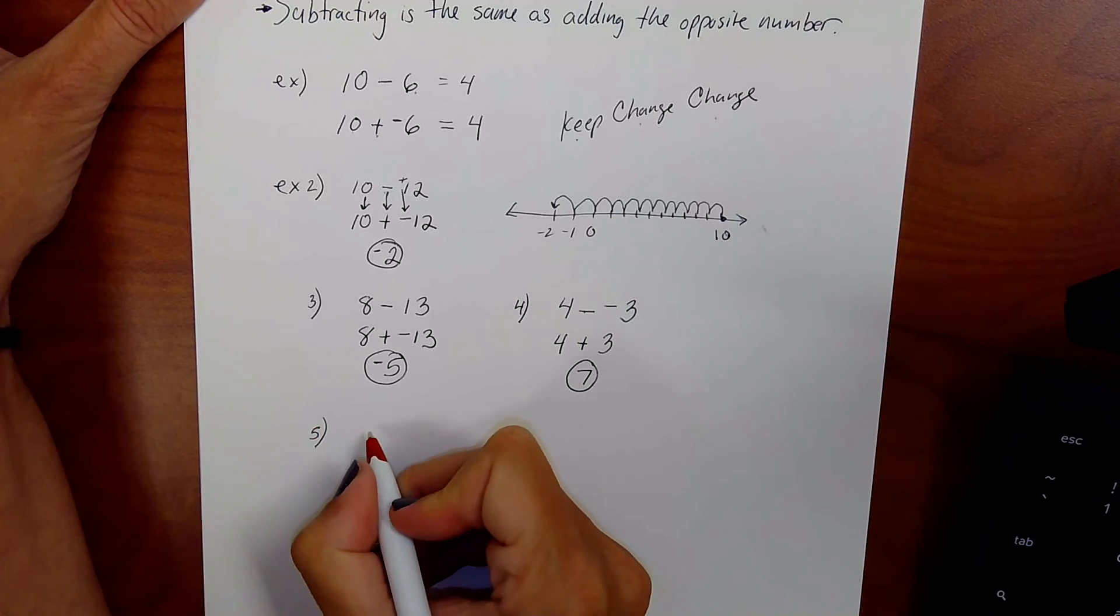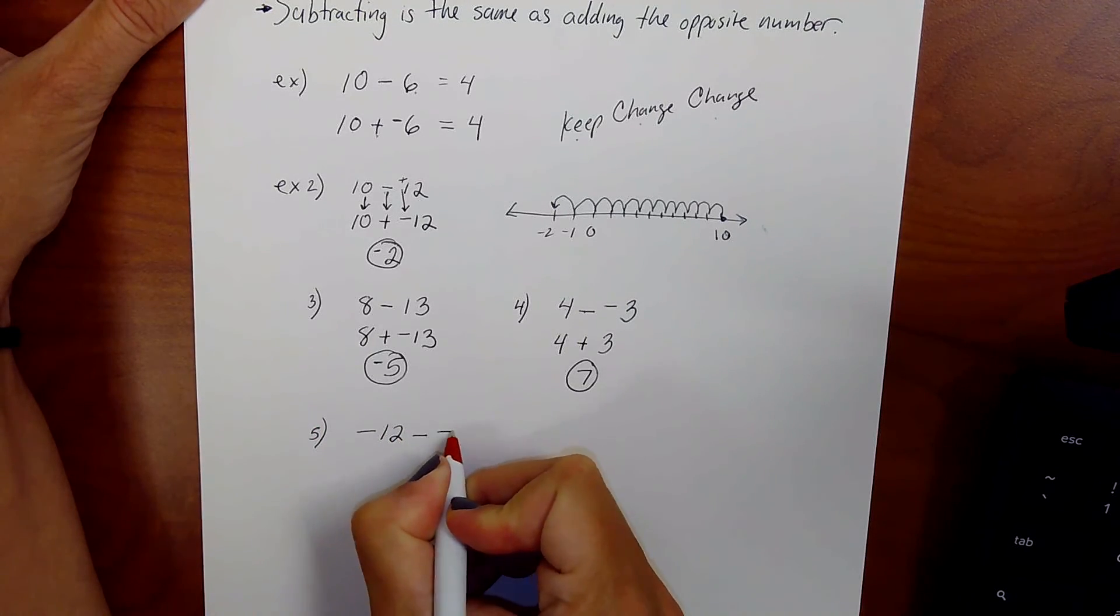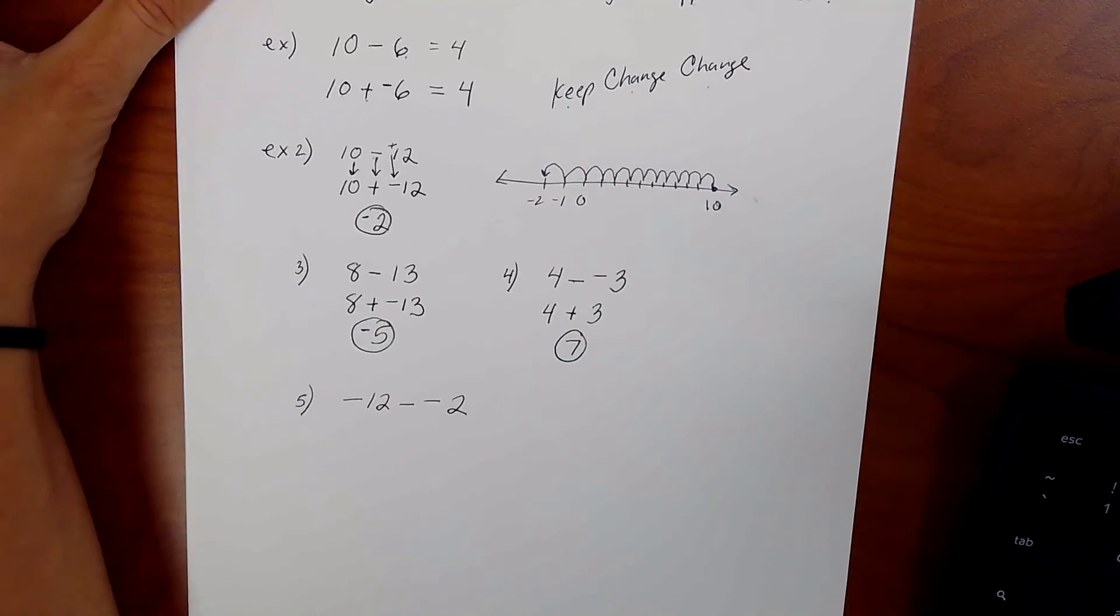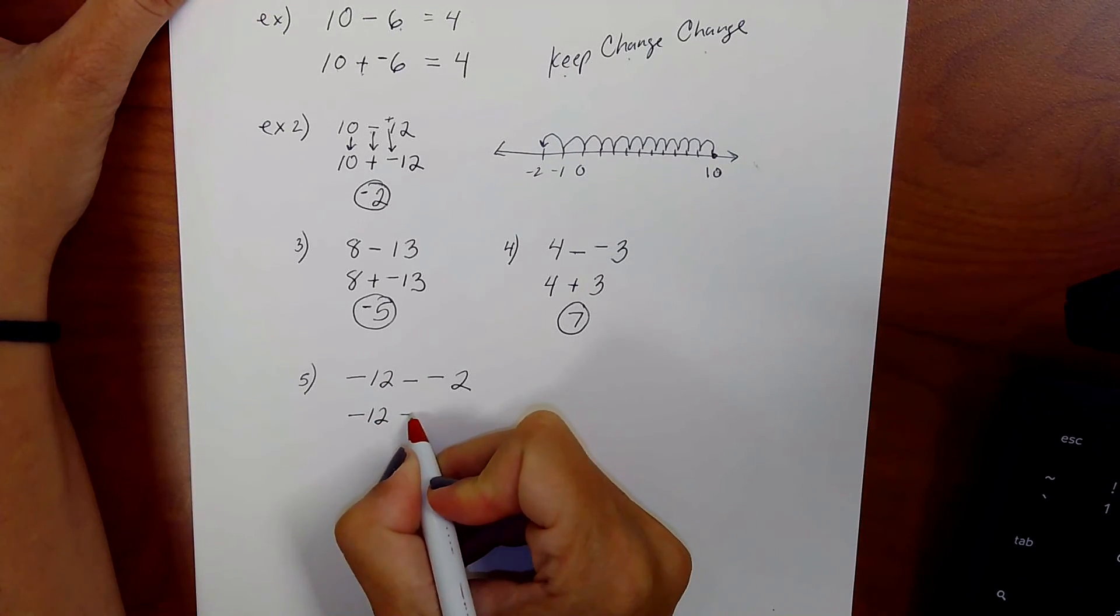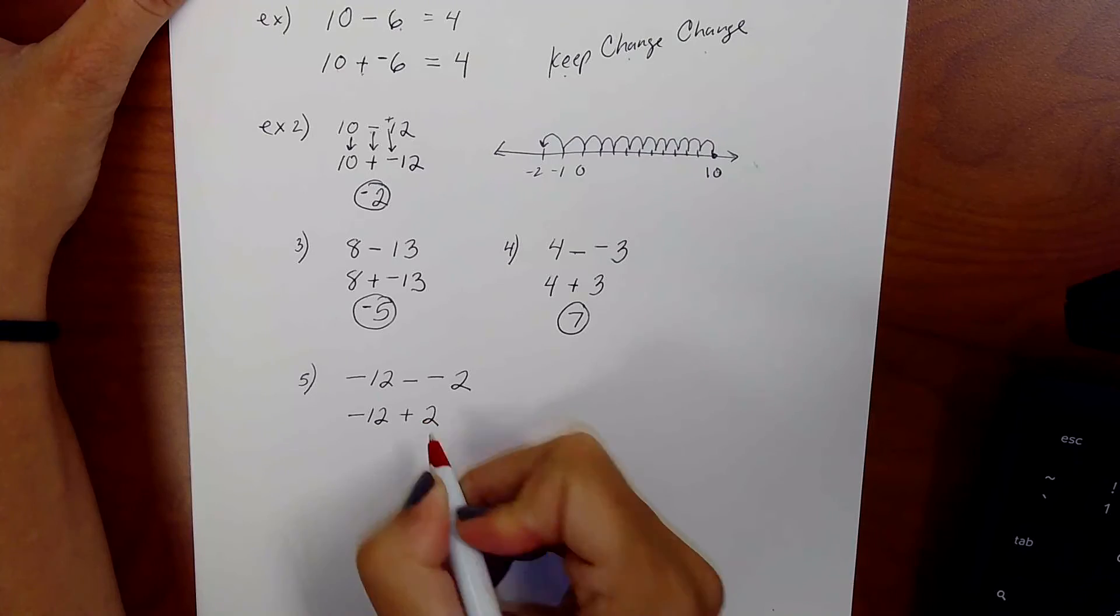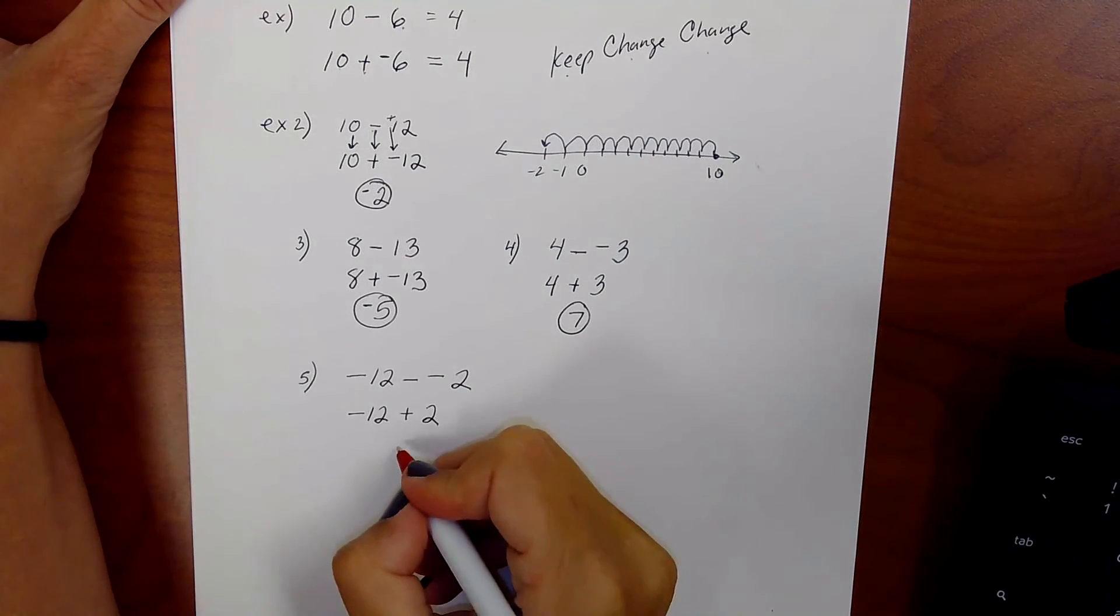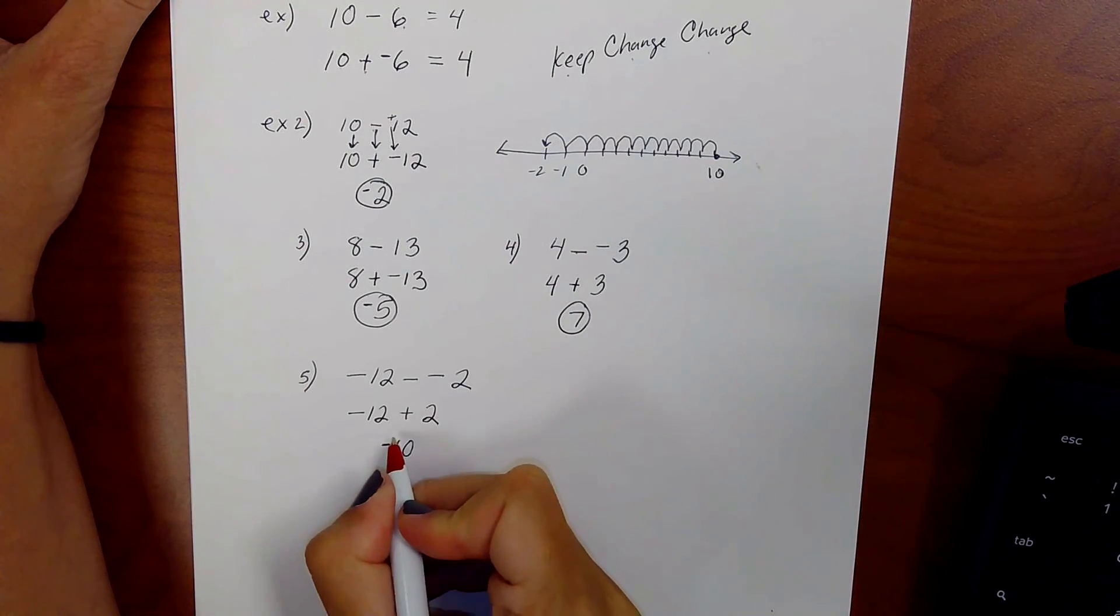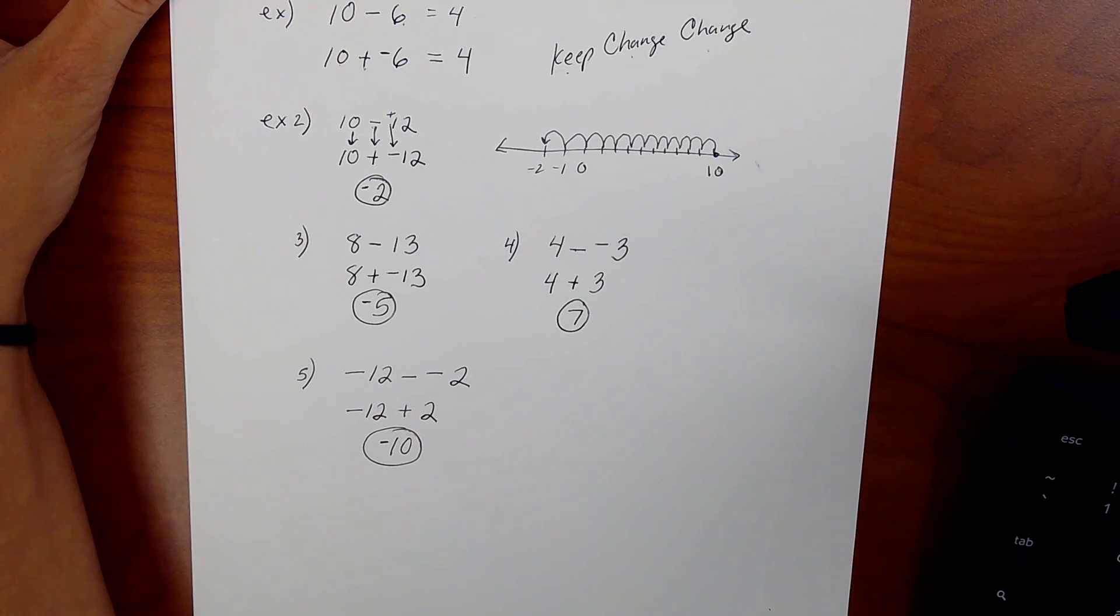If they were both negative, let's try negative 12 minus negative 2. Just follow the rule, keep the first number the same, so negative 12 stays the same. Change this, change that to a positive 2. So now negative 12 plus 2, the signs are different. So I subtract, I get a 10. It's going to be negative 10 because the 12 is greater.